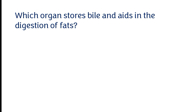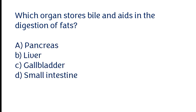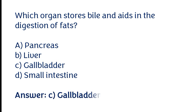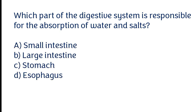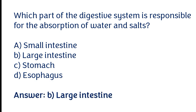Which organ stores bile and aids in the digestion of fats? Options: a) Pancreas, b) Liver, c) Gallbladder, d) Small intestine. The correct answer is option C. The gallbladder stores bile and aids in the digestion of fats. Which part of the digestive system is responsible for the absorption of water and salts? Options: a) Small intestine, b) Large intestine, c) Stomach, d) Esophagus. The correct answer is option B. The large intestine is responsible for the absorption of water and salts.